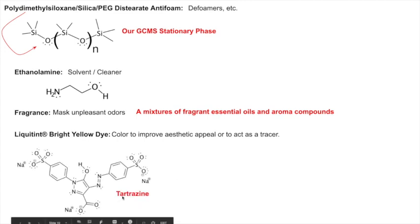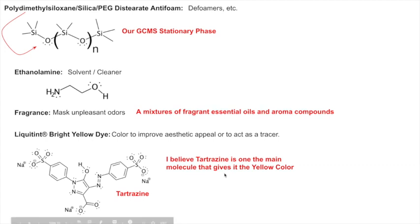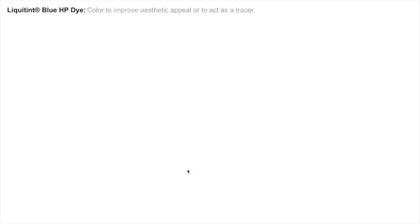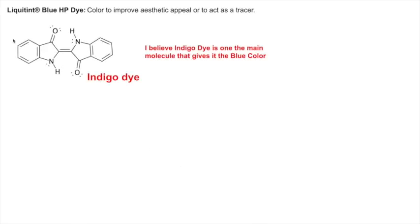The dye can also act as a tracer — like in toilet bowl cleaners so you can see where you've sprayed. Tartrazine is the main yellow dye component. It has a lot of aromaticity — aromatic rings that conjugate to the nitrogens — and lots of conjugation. That's what gives it its color: it makes its HOMO and LUMO close enough together that their energy gap corresponds to a yellow color. There's also a blue dye — indigo — with a benzene ring conjugated all the way through, giving it the blue color.